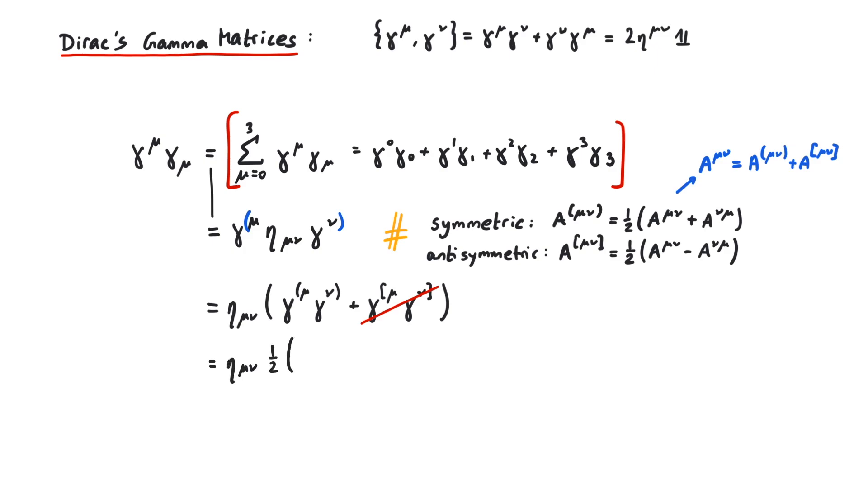Applied to the gamma matrices, this is one-half times gamma mu gamma nu plus gamma nu gamma mu. Look at that, we found the anticommutator again. So we can write this as one-half eta mu nu and the anticommutator of the two gamma matrices.